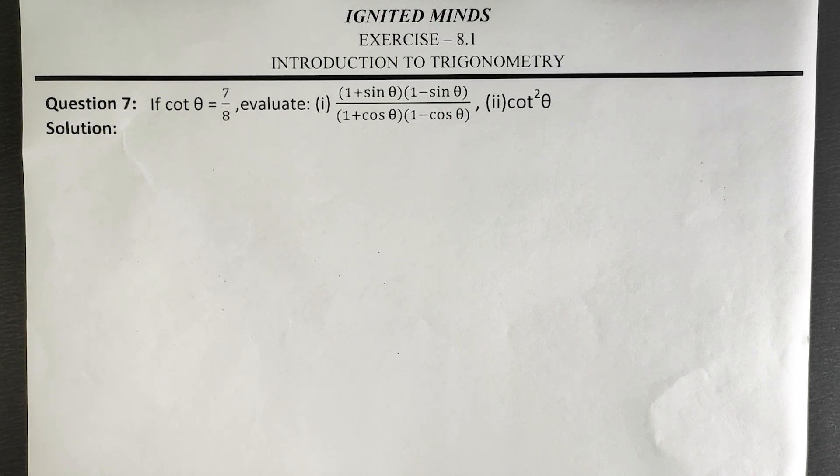If cot θ equals 7 by 8, evaluate (1 plus sin θ into 1 minus sin θ) by (1 plus cos θ into 1 minus cos θ). And the second part is cot squared θ.